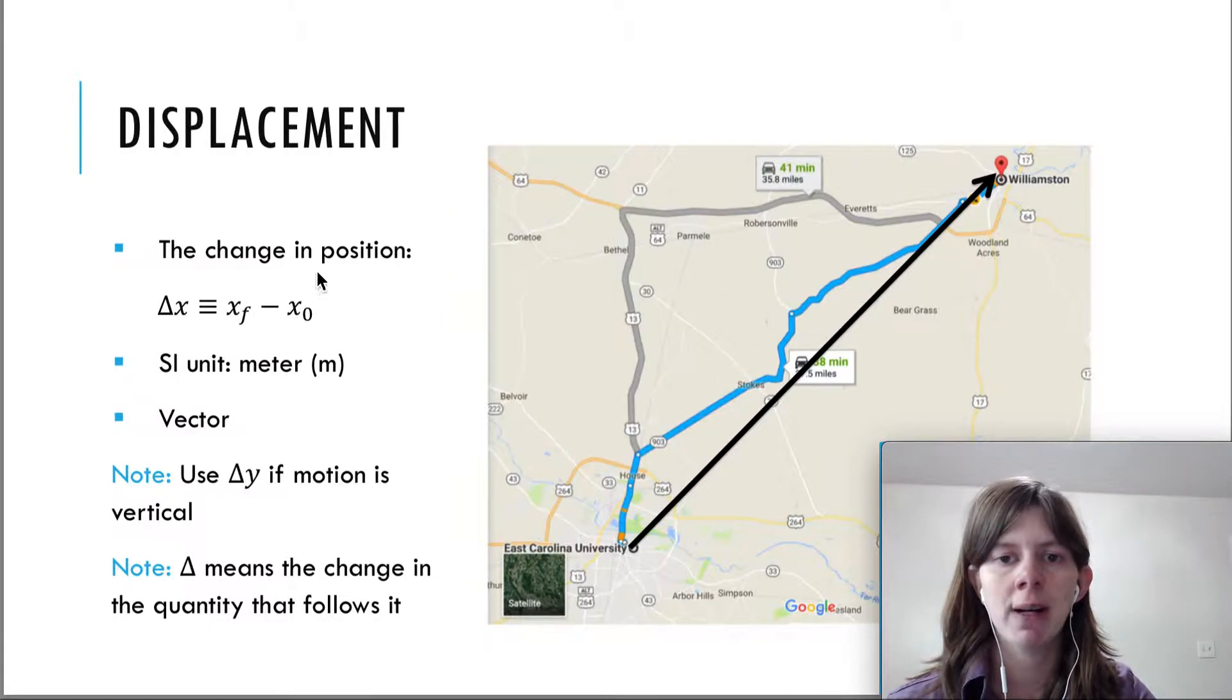Displacement is defined as a change in position. We use delta x here for displacement, and I have a note here. Delta means a change in the quantity that follows it. Whenever you see this delta,